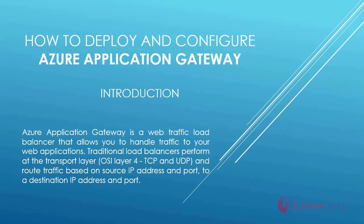Welcome to Linux Help. Today we are going to see how to deploy and configure Azure Application Gateway. Azure Application Gateway is a web traffic load balancer that allows you to handle traffic to your web applications. Traditional load balancers perform at the transport layer, OSI layer 4, TCP and UDP, and route traffic based on source IP addresses and port to a destination IP address and port.